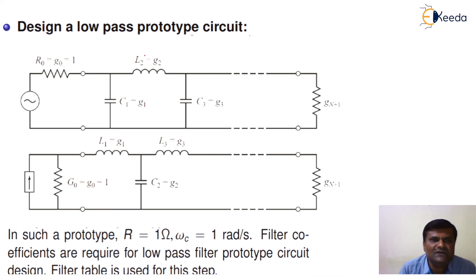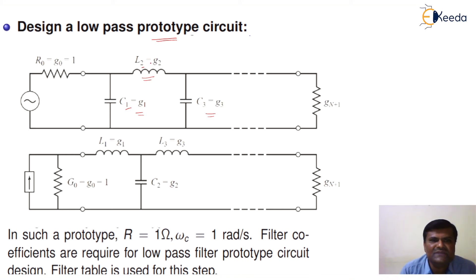The next part is to design a low-pass filter prototype circuit. The figure shows the different components in this circuit. As per the definition of low-pass, it has series inductances and shunt capacitors. The numbers 1, 2, and 3 represent the number of reactive components present in the circuit. Here, 3 reactive components are shown: C1, L2, and C3.